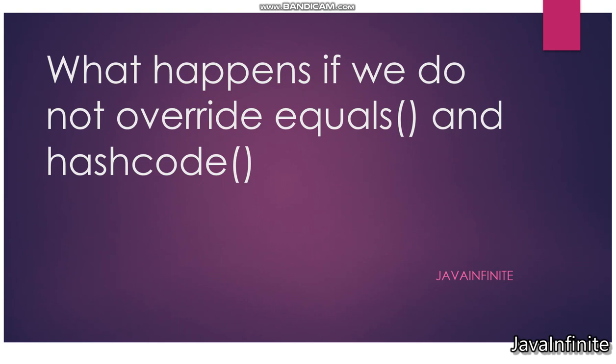Hello everyone. In this video let us discuss what will happen if we do not override equals and hashCode in an object which we are going to use as a key in HashMap. To understand this concept you need to have a basic understanding of the internal working of HashMap. If you are unaware of that concept, I have provided the link in the description — please go to that video before continuing.